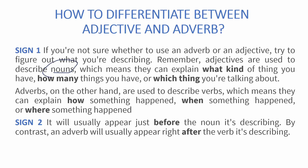An adjective is also used to describe a pronoun, while an adverb is always used to describe a verb — how an action is being performed or even when an action is being performed. So, the first sign is: if you are describing a noun or a pronoun, use an adjective; if you are describing a verb, use an adverb.